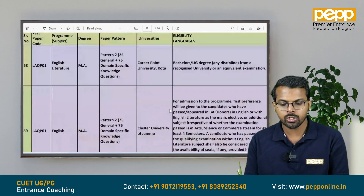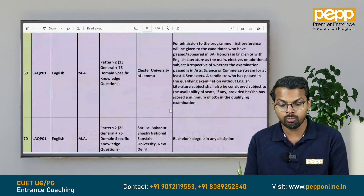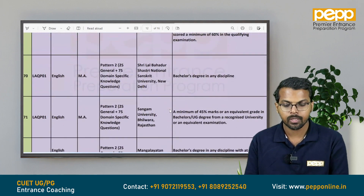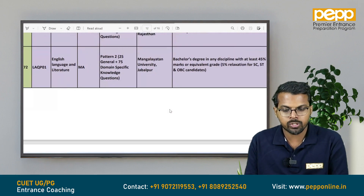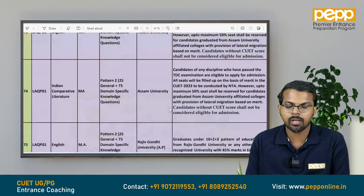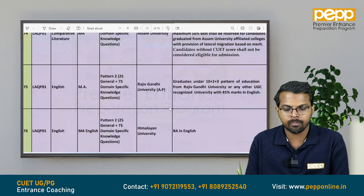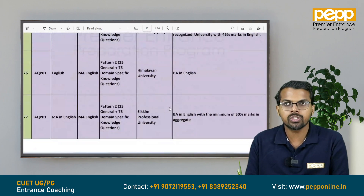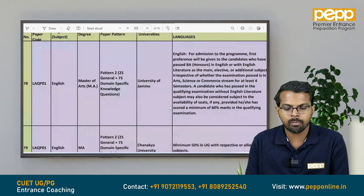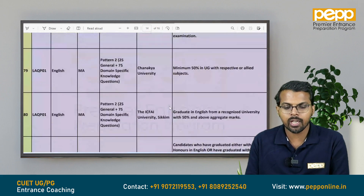Career Point University Kota. Cluster University Jammu. Shri Lal Bahadur Shastri National Sanskrit University — MA English. Sangam University, Rajasthan. Mangalayatan University, Jabalpur — English Language Literature. Assam University — MA English, MA Indian Comparative Literature. Ravishankar Gandhi University — MA English. Himalayan University — MA English. Sikkim Professional University — MA English. University of Jammu — MA English. Chanakya University.